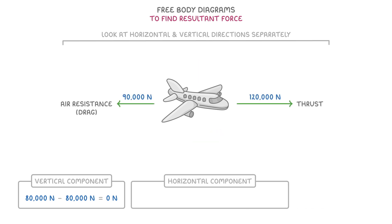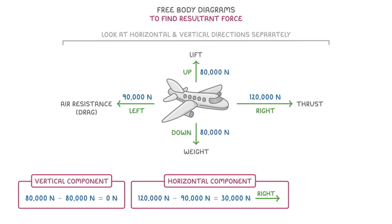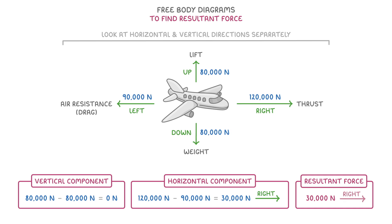For the horizontal component though, we have 120,000 newtons to the right and only 90,000 newtons to the left. So by doing right minus left, we get a resultant force of 30,000 newtons in the right direction. So overall, taking into account the vertical and horizontal components, we'd still have an overall resultant force of 30,000 newtons to the right.